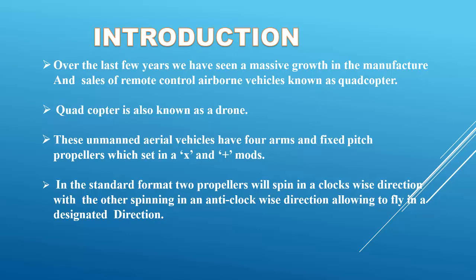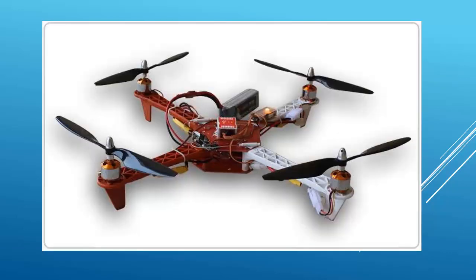I will teach you what the X and plus modes are. In the standard format, two propellers spin in the clockwise direction and the other two spin in the anti-clockwise direction, allowing the drone to fly in a designated direction. Here you can see the quadcopter design, which I think is the best design overall, and we are using a 4500 mAh battery.